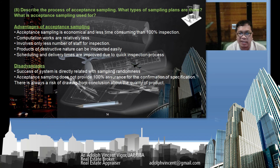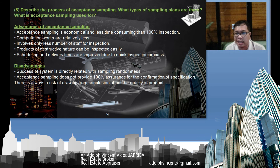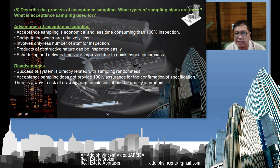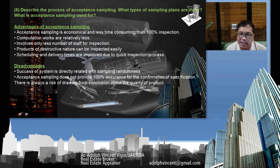Further advantages of acceptance sampling: it involves fewer staff for inspection, products of a destructive nature can be inspected easily, and scheduling and delivery times are improved. The disadvantages are that the success of the system is directly related to the randomness of sampling, it does not provide 100% assurance of conformance to specifications, and there is a risk of drawing incorrect conclusions about the quality of the product.